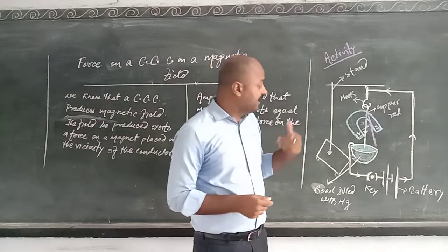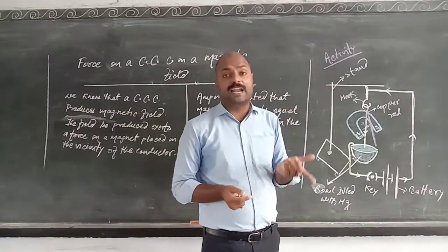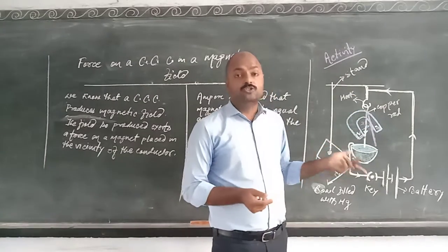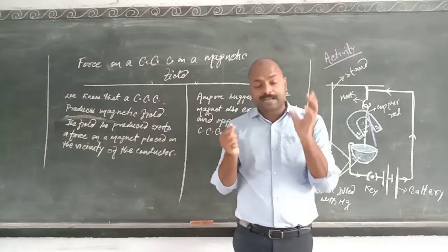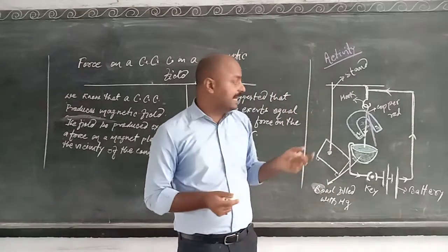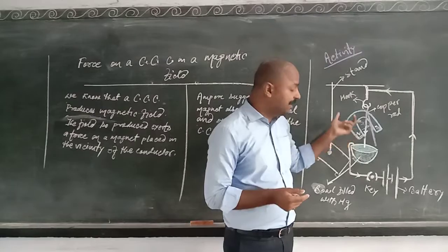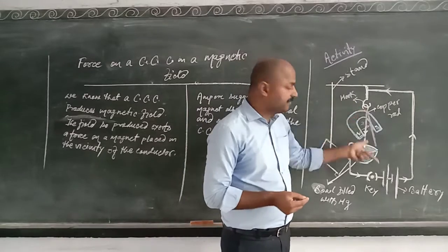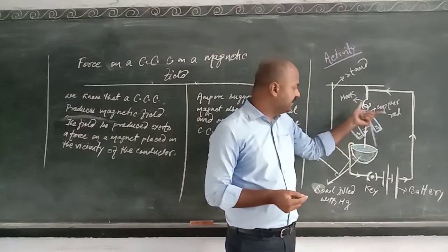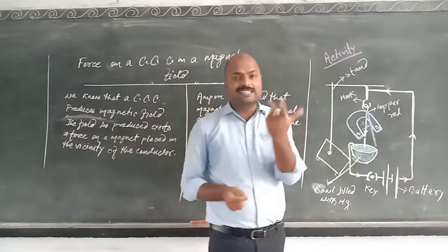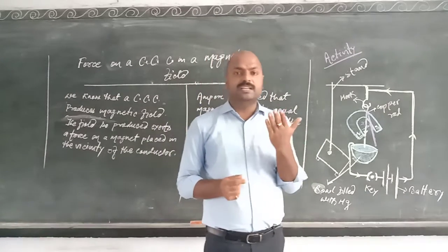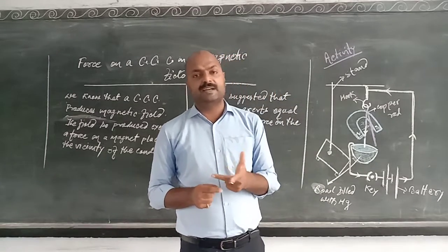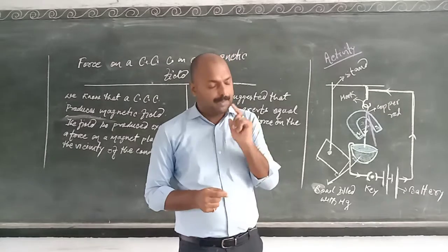This rod continuously moves forward and backward — to and fro motion. Now, how can we detect the direction of force experienced by this hanging copper rod? Fleming has given a very useful tool for this — Fleming's Left Hand Rule — which allows us to find out the direction of force experienced by the conductor in a magnetic field.